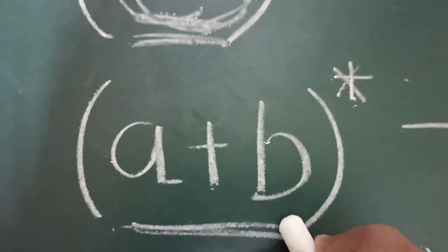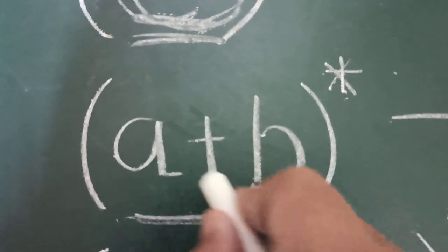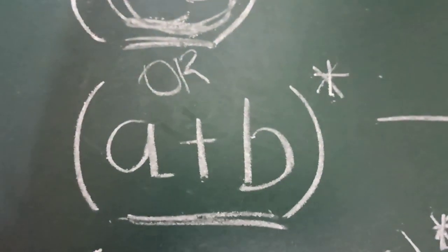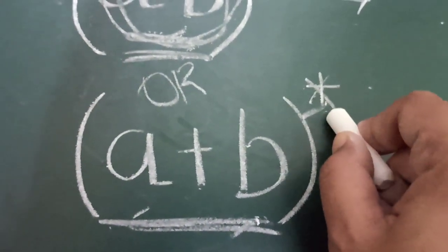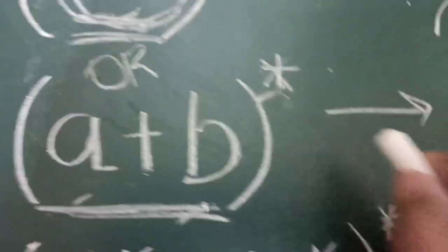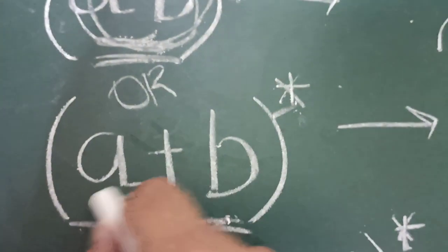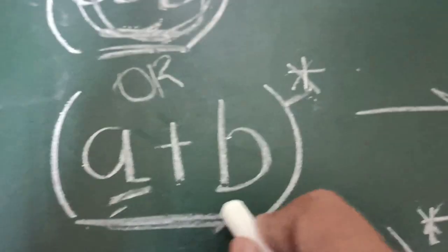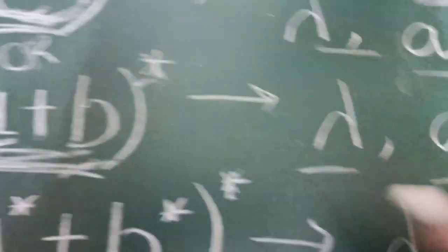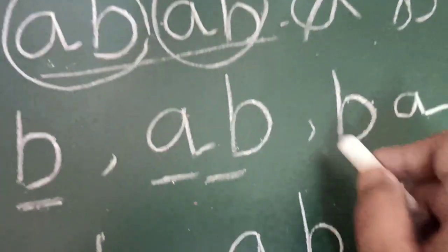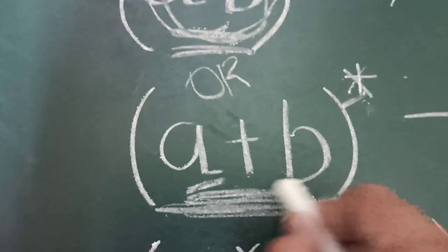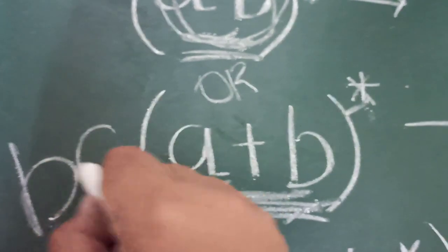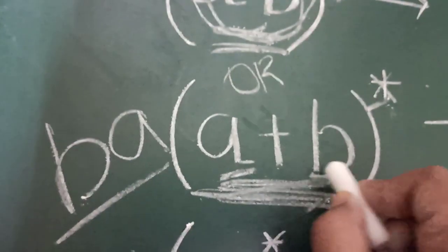Next one is (A+B)*. Plus means OR — so A or B, whole star. Either A or B, and because the star is there, lambda is accepted. It can be a zero-length string. So definitely lambda is accepted. Only one A can come, only one B can come, and any combination of A and B is accepted. So AB can come, BA can also come — taking B first, then A. Even BAA and other combinations are accepted here.